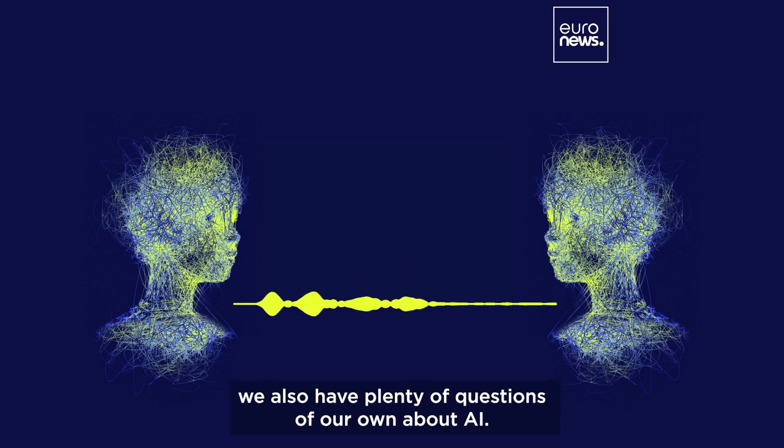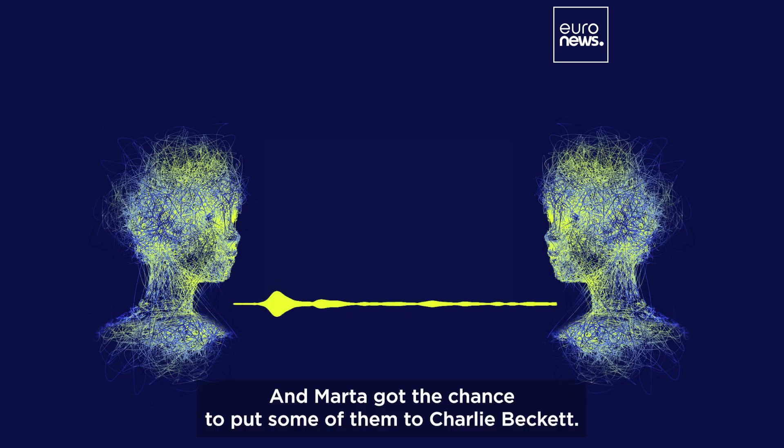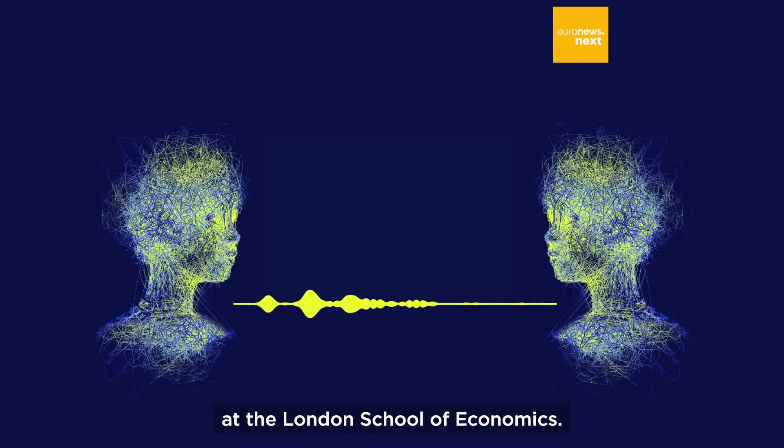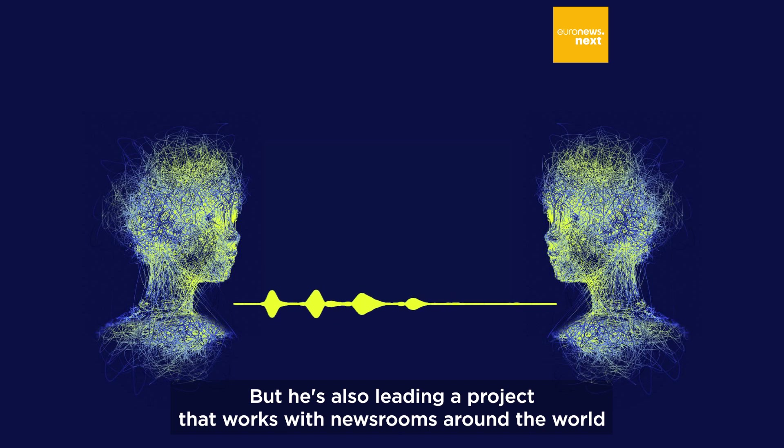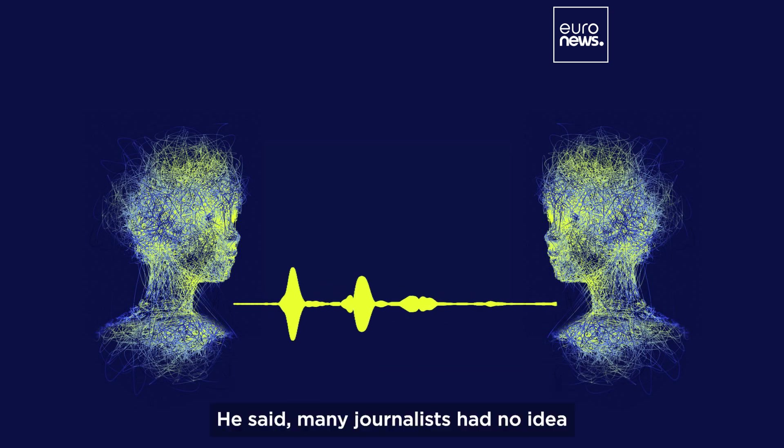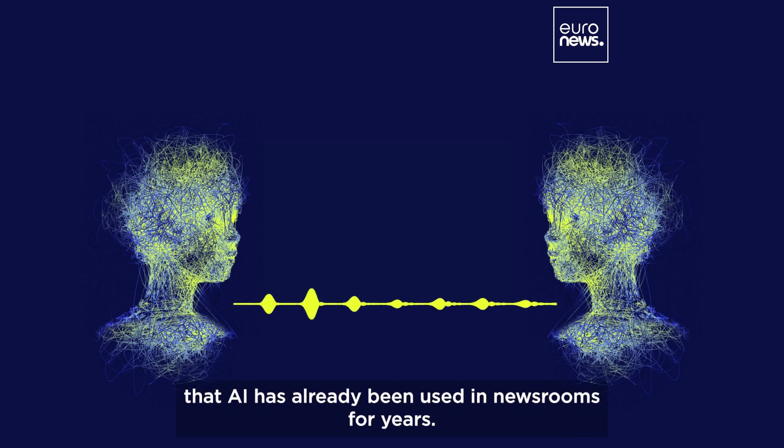As journalists, we also have plenty of questions of our own about AI, and Marta got the chance to put some of them to Charlie Beckett. He's a journalist and a professor in the Department of Media and Communications at the London School of Economics, but he's also leading a project that works with newsrooms around the world to explore how AI is impacting jobs in journalism like his own.